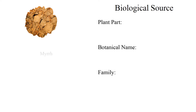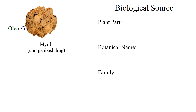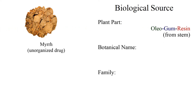Regarding the plant part, Myrrh is an organized drug, meaning it is obtained from plant sources but does not contain plant part or plant tissue. Myrrh is an oleogum resin obtained from the stem.